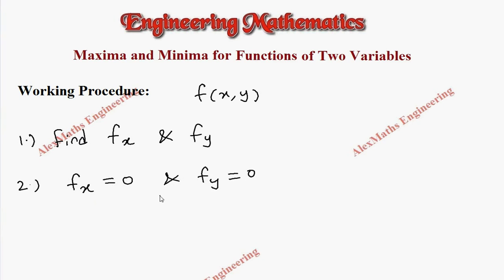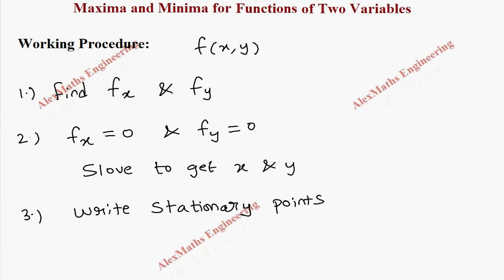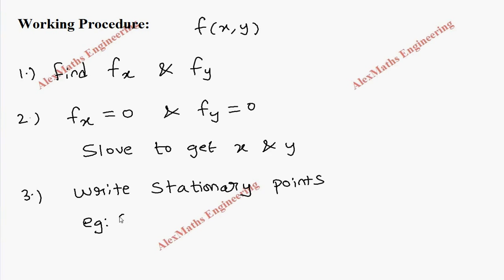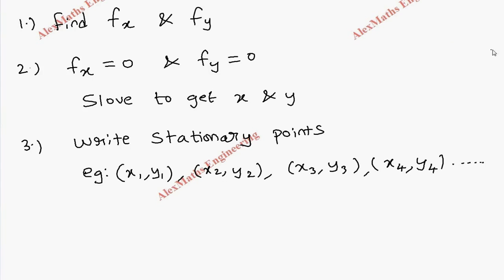In step 2, we have to equate fx equal to 0 and fy equal to 0. We get equations, and after solving the equations we get the values of x and y. These values are called stationary values, and we write them as coordinates called stationary points. The number of points depends upon the equations we got from fx and fy — sometimes we get one point or more than four points.